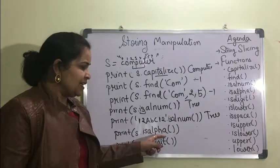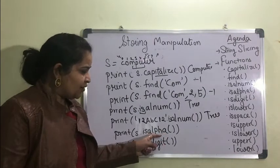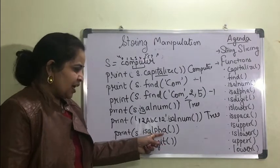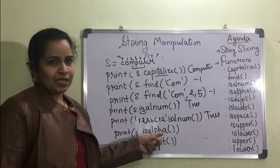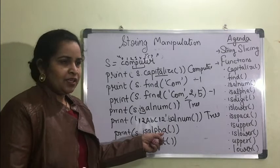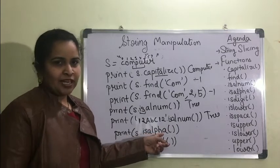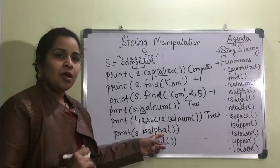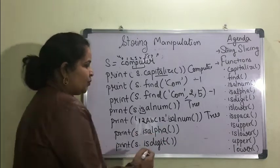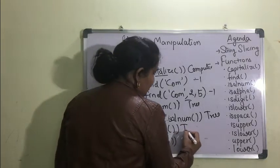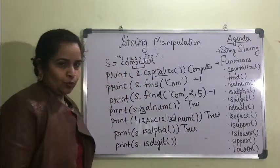s.isalpha() checks whether only alphabets are present. If there is any number or special character, it returns False. In this case the string contains only alphabets, so it will return True.